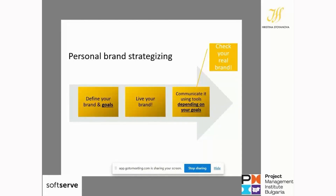An important point: when we communicate our personal brand, we have one brand in mind, but the people consuming it may get something different. That's why I recommend you always check your real brand. You communicate your brand through your network, but you need to check that this is really the brand other people get from you — is it really what they say about you when you're not in the room? Ask them, anonymously or directly.